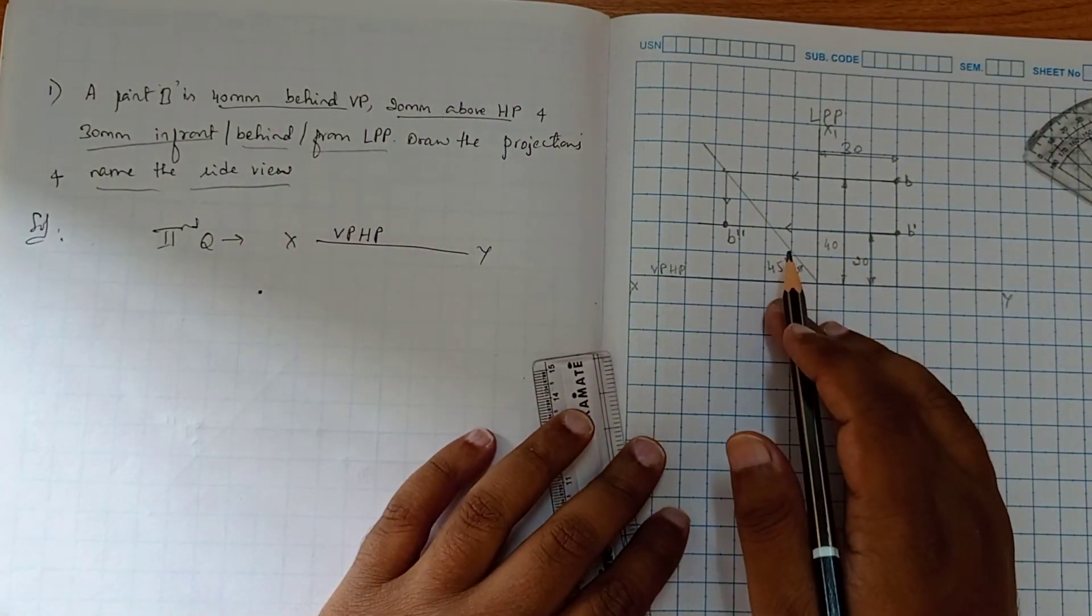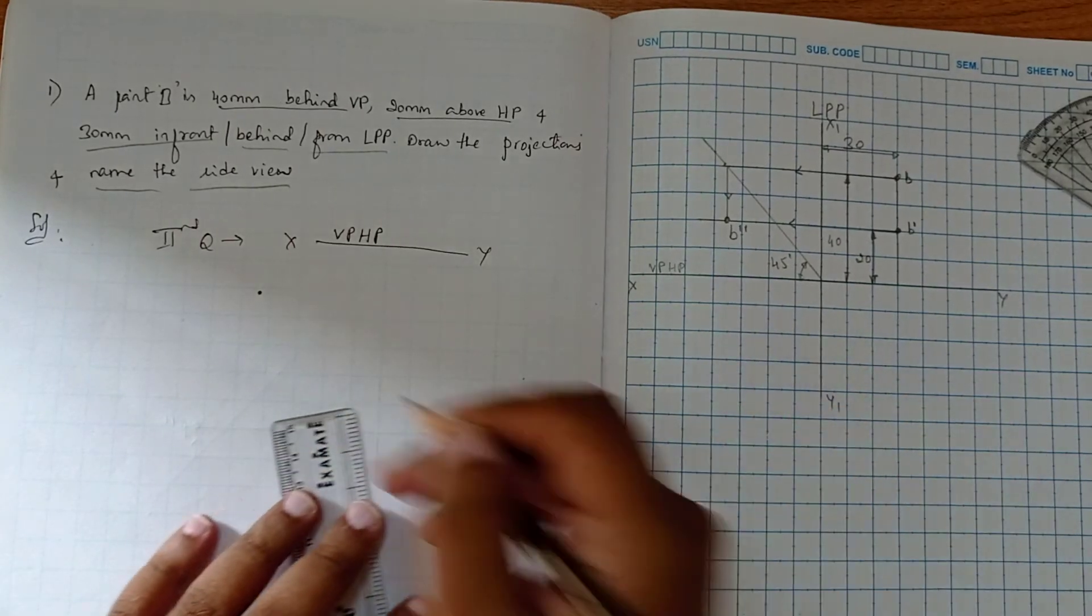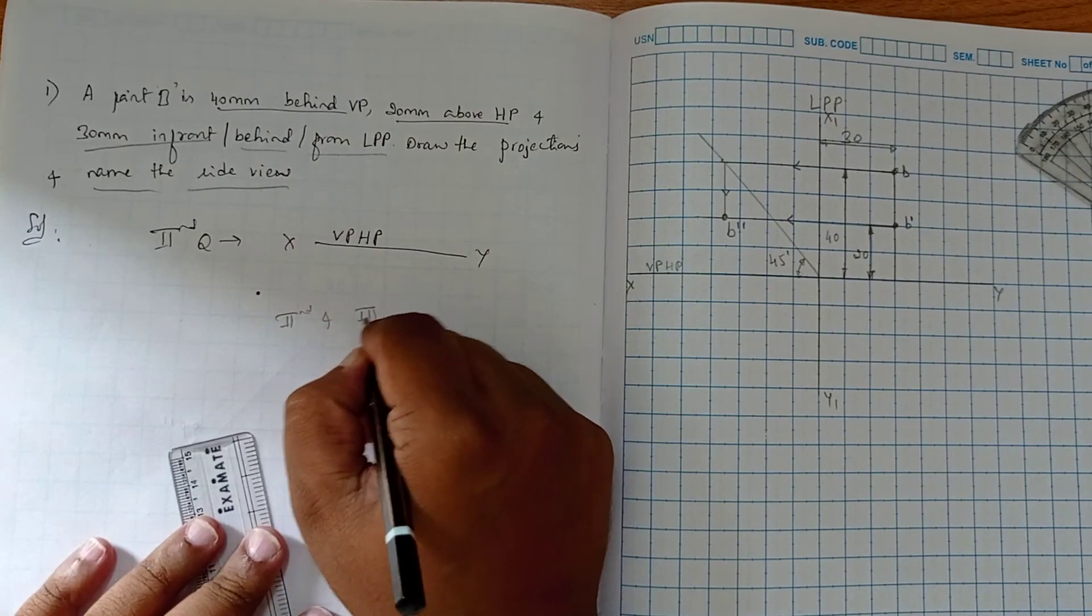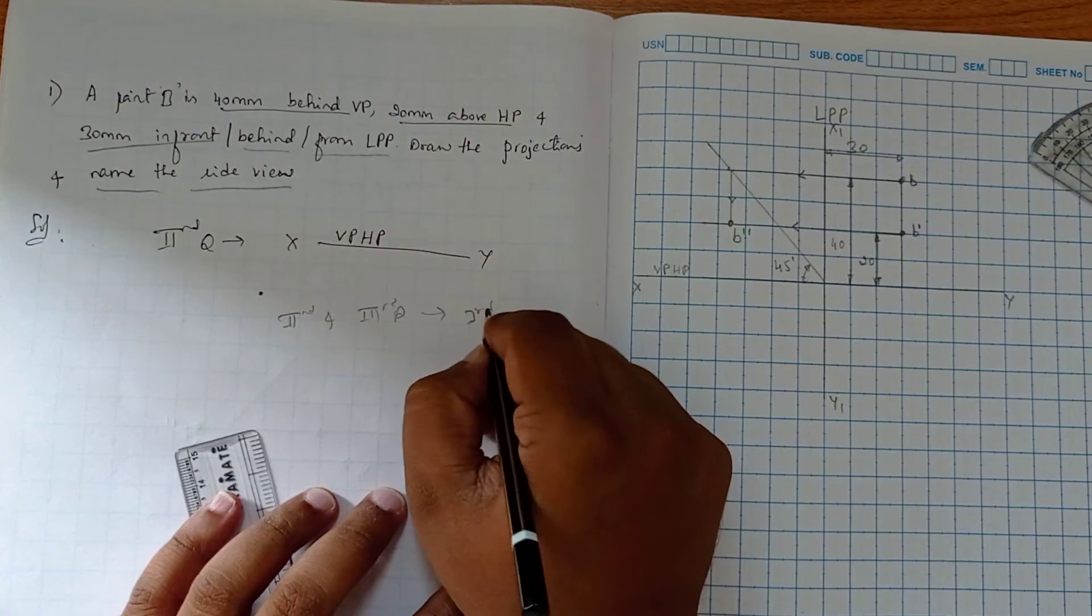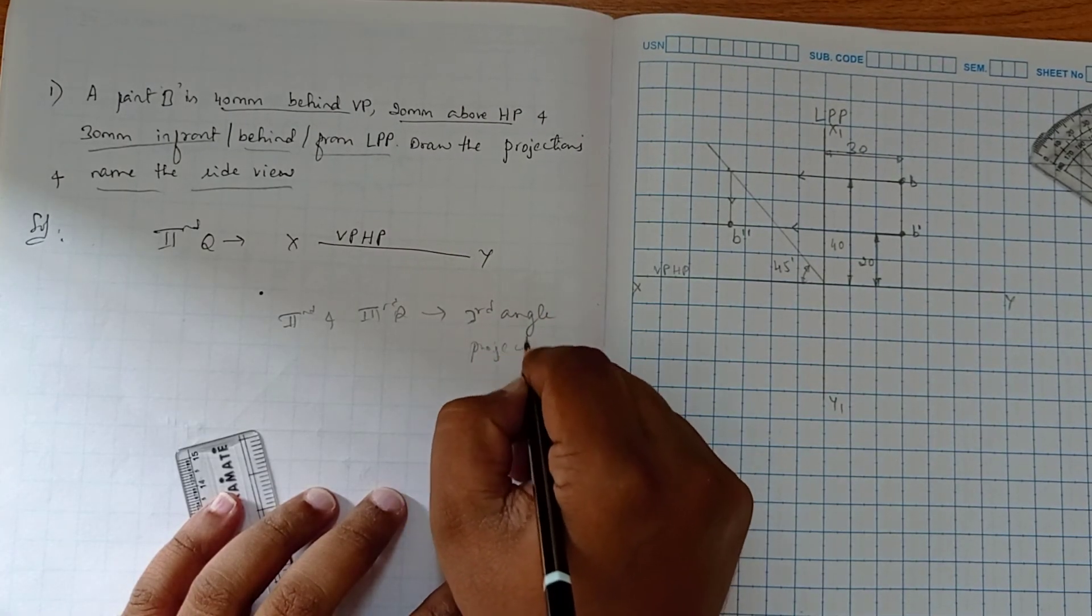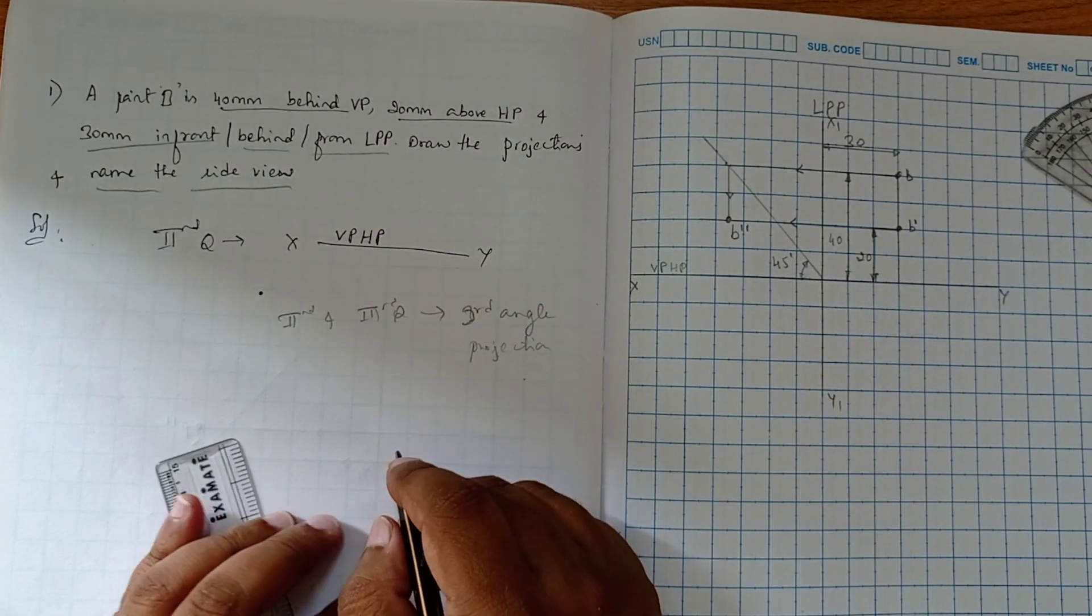Now in this question they have mentioned: name the side view, which view is it? So it is the second quadrant. In second and fourth quadrants, this comes under third angle projection.